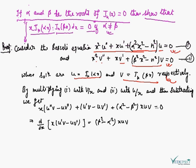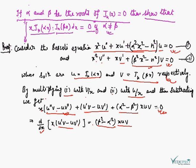Now by multiplying equation one by v/x and equation two by u/x, and then subtracting, we get: x(u''v − uv'') + (u'v − uv') + (α² − β²)xuv = 0. This can be written as: d/dx [x(u'v − uv')] = (β² − α²)xuv.